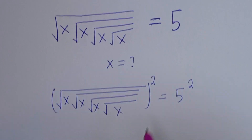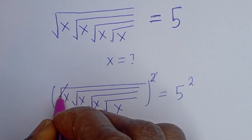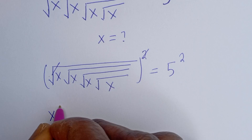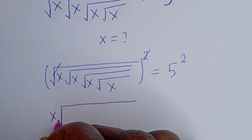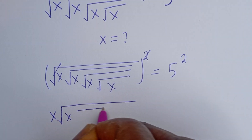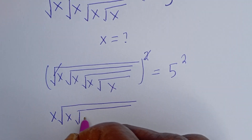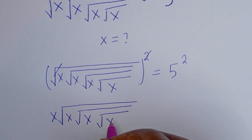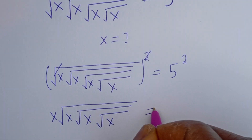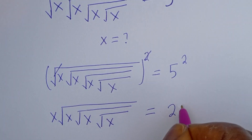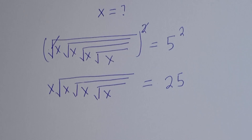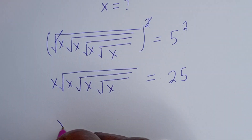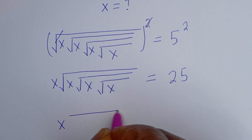After squaring, this will cancel and we have s times square root of s times square root of s, all equal to 5 squared, which is 25. Now again let's square both sides of this equation. We have s times square root of s times square root of s, all squared.